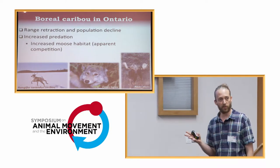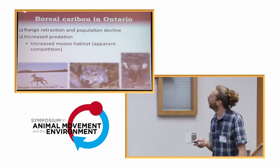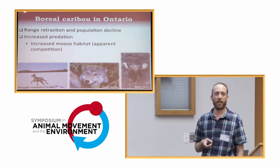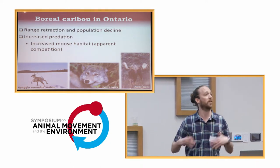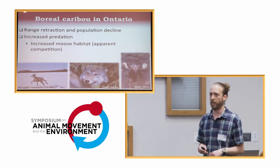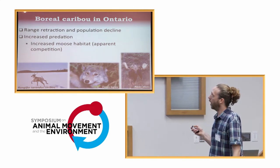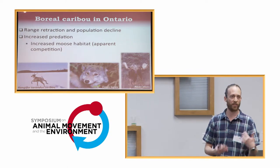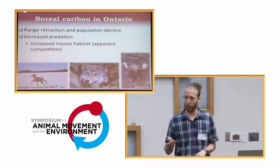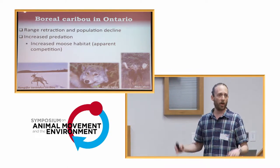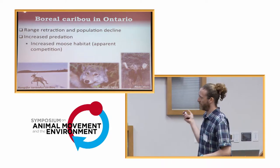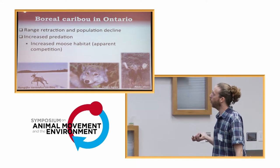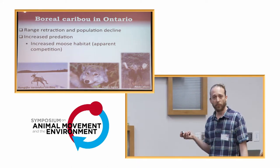The main predator across most of the range is wolves. And one of the leading hypotheses behind this increased predation, or why do wolves eat so many caribou, is that we have increased moose habitat. And we create this moose habitat by cutting down forest. So timber harvest, we have a lot of young forest, that's prime habitat for moose. We have a lot of moose, which is the major prey for wolves. And as a result, we have a lot of wolves.